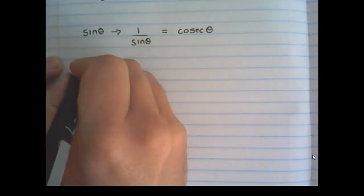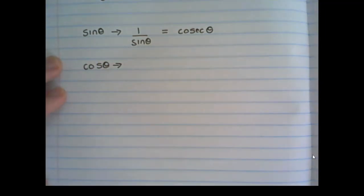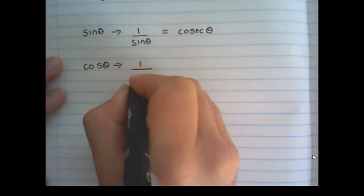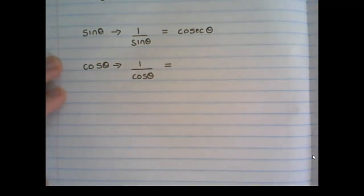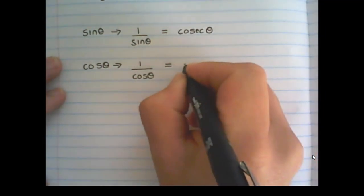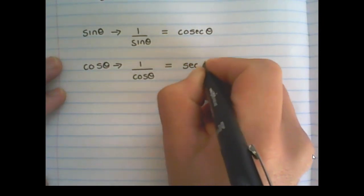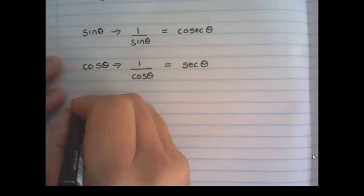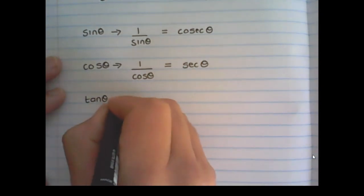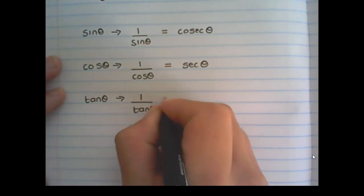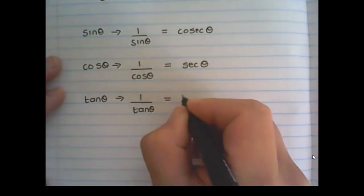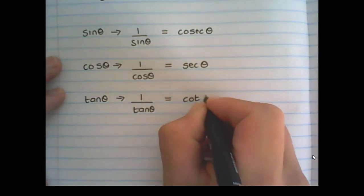Then we have cos theta. Its reciprocal function would be 1 over cos theta, but we call 1 over cos theta, sec theta. And then for tan theta, its reciprocal function is 1 over tan theta, and in mathematics we call that cot theta.